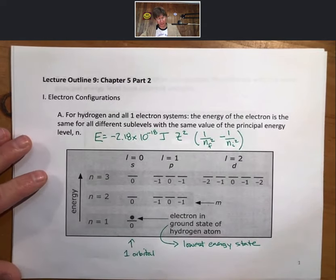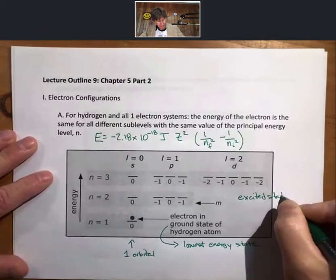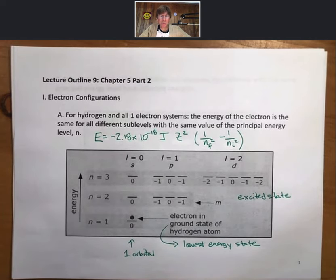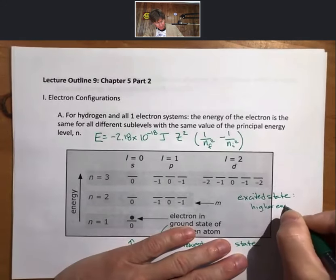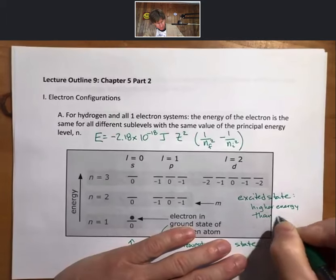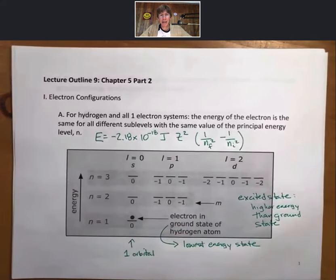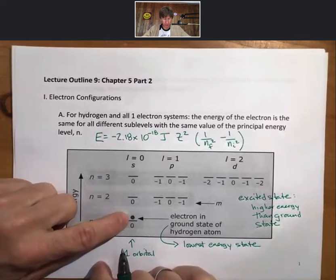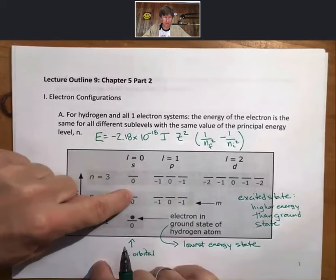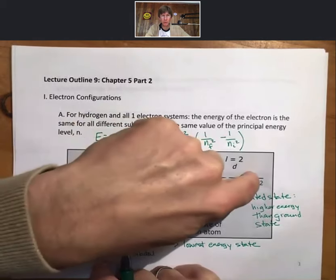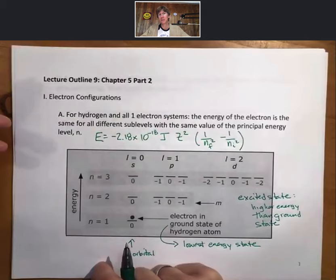The other thing we want to define is what's called an excited state. An excited state is any state with higher energy than the ground state. So for hydrogen, if the electron were instead of being in the 1s orbital, were in the 2s or 2p, 3s, 3p, or 3d, any of those orbitals, it would be in an excited state. So there are many excited states. There's only one ground state.